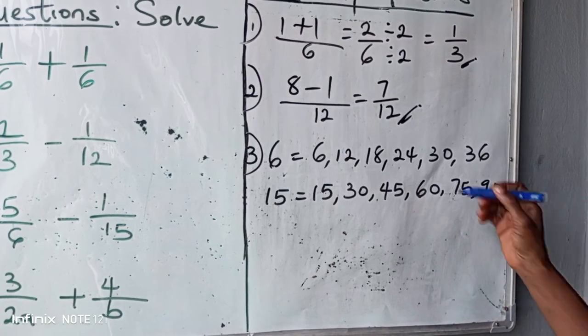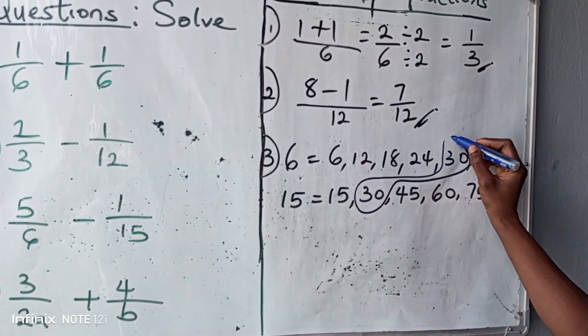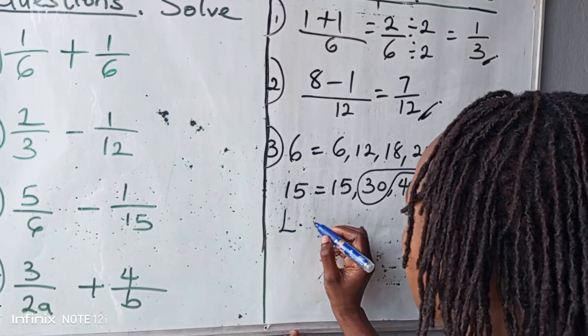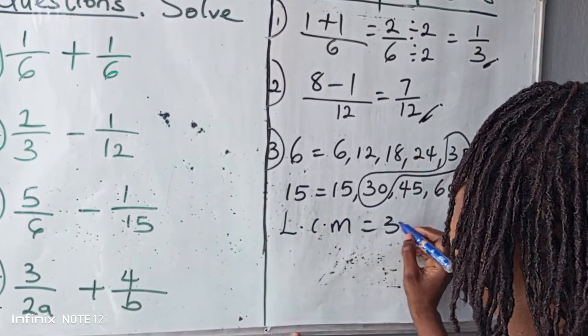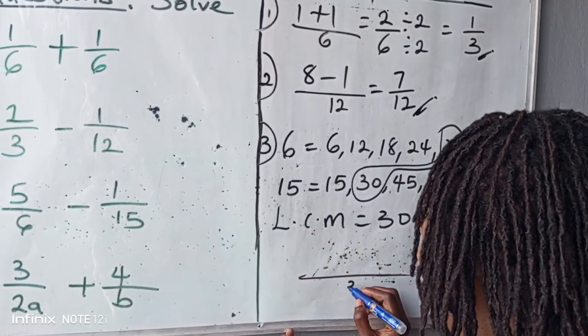Now check. Do we have any common multiples? Yes, thirty is our common multiple. So thirty is our LCM.